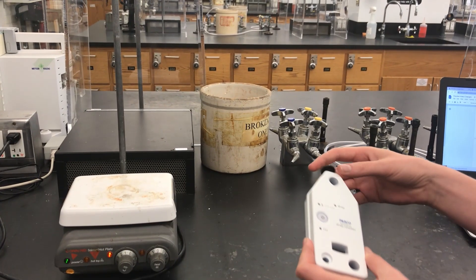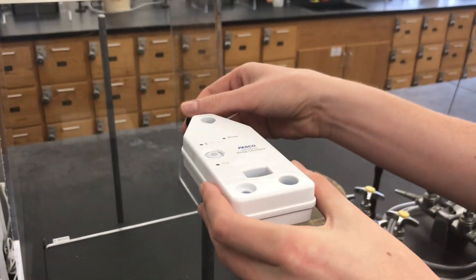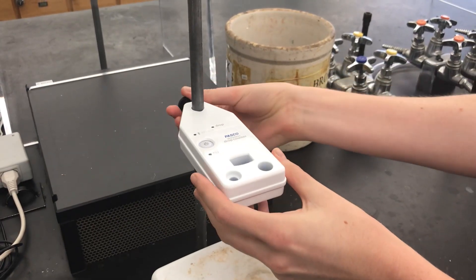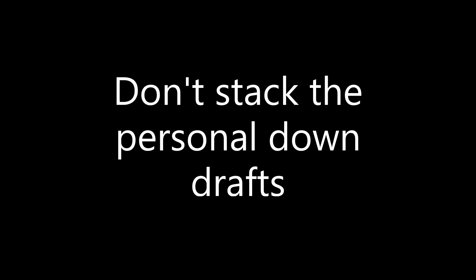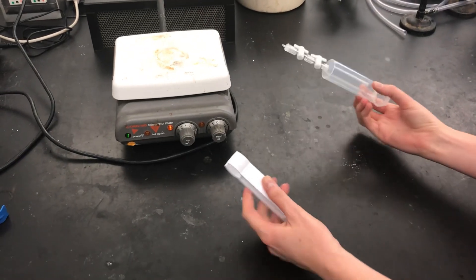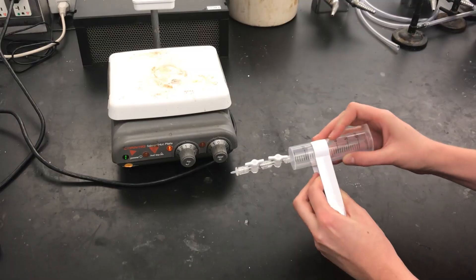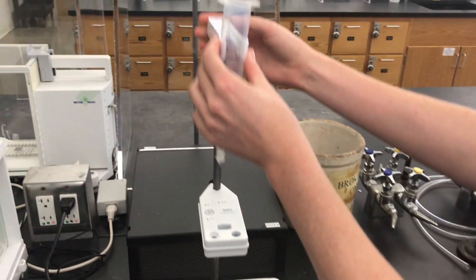To start setting up the equipment, attach the drop counter to the ring stand by sliding it on and then tightening it. You can move your personal downdraft, just be careful with it and don't put it on the floor. Also don't stack the personal downdrafts. Then insert the syringe into the clamp by sliding it up the end with a stopcocks. You can then put the clamp onto the ring stand and tighten it.